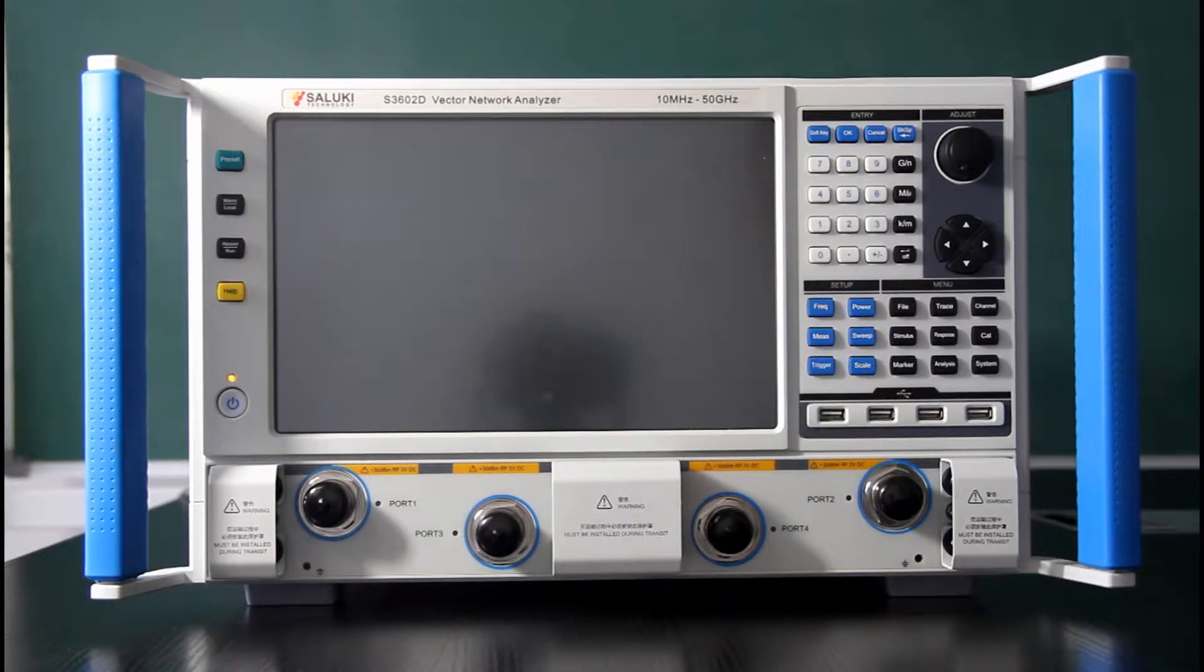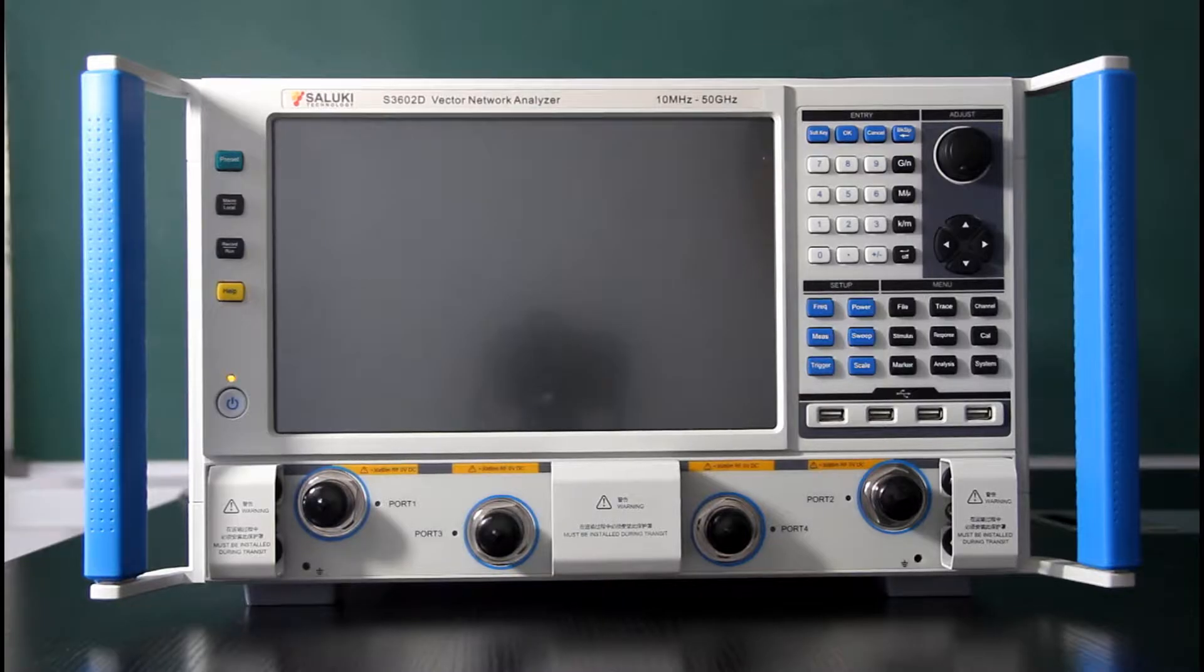This Series can reach up to 67 GHz and with Saluki frequency extenders it can reach up to 325 GHz. Now we are showing you the 3602D which reaches 50 GHz and we have another model 3602E which is 67.